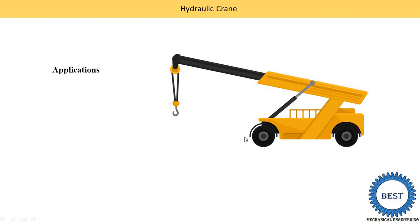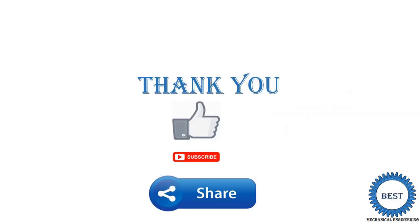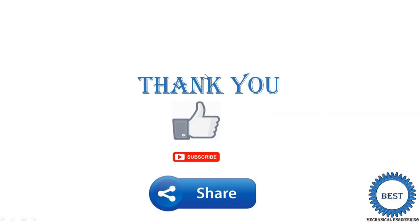Next, we study the applications of hydraulic cranes. Hydraulic cranes are used in different workshops for lifting raw materials — in industries there is lots of heavy material used for constructing boilers, turbines, or any other devices. They are used in warehouses — such as Flipkart, Amazon, and other different types of warehouses — for transferring loads. They are also used in dock slidings. These are the various applications. Thank you for watching this video. If you learned something, like, subscribe, and share with your friends.